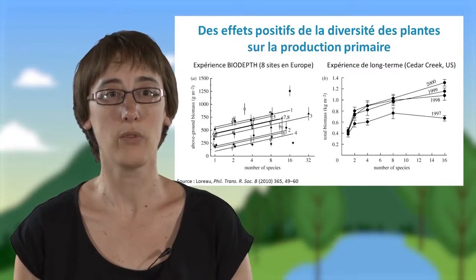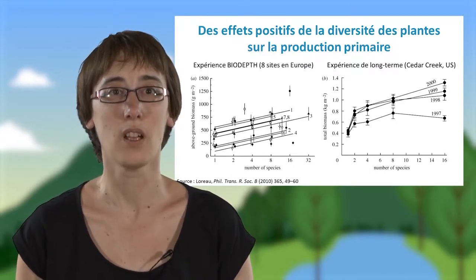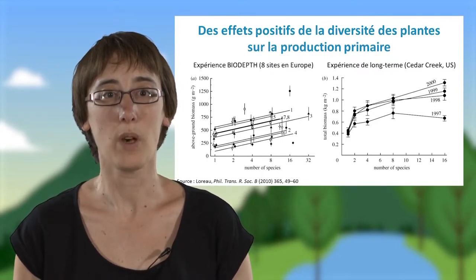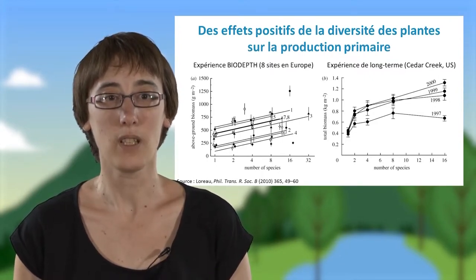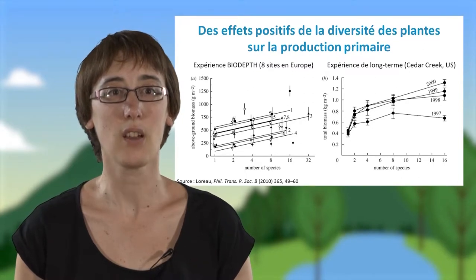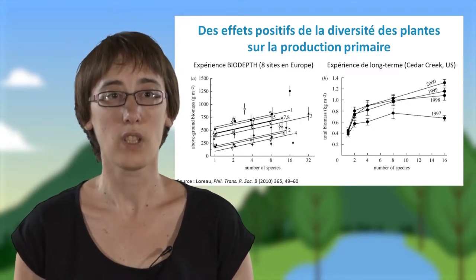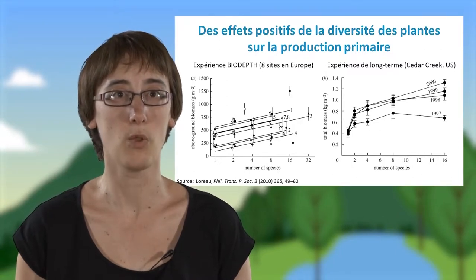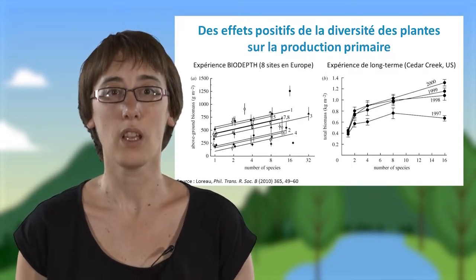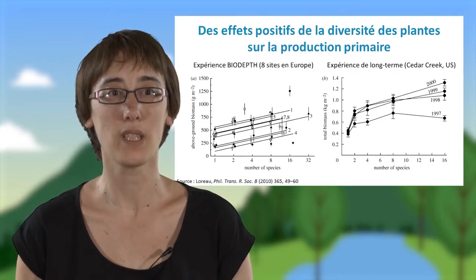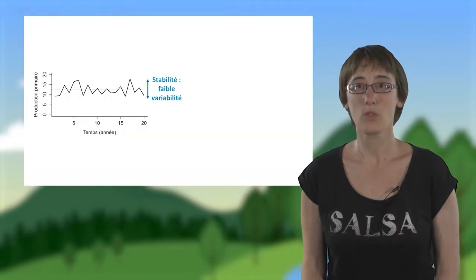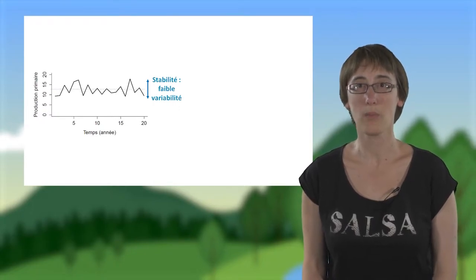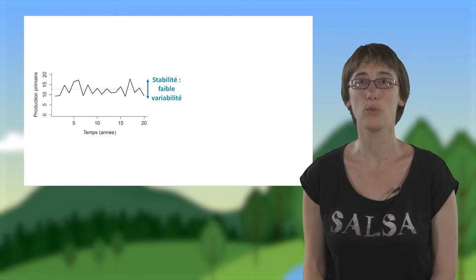Tout d'abord, comme vous pouvez le voir sur ces deux graphiques, la production primaire, qui est représentée par la biomasse végétale totale, est plus élevée à forte diversité qu'à faible diversité. C'est un résultat très général que l'on retrouve sur plusieurs pays, comme le montre le graphique à gauche, et sur plusieurs années d'expérience, comme le montre le graphique à droite. Ces expériences montrent non seulement des effets de la diversité sur la production primaire, mais également sur la stabilité de cette production.